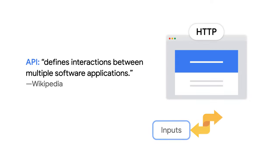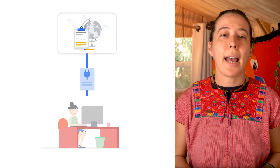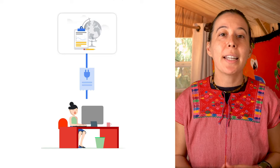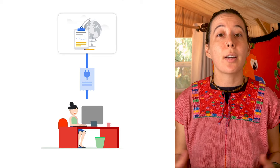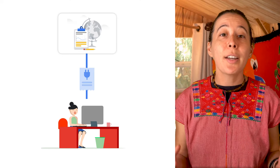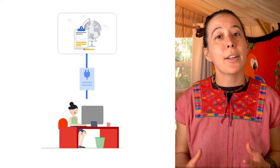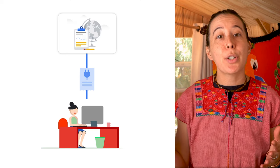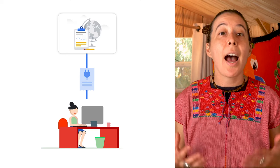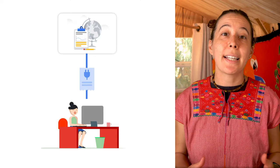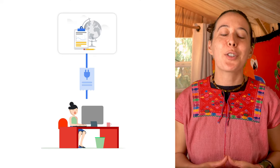API stands for Application Programming Interface and it's like a library of functions that passes information over the web. It defines the inputs and outputs available over HTTP. For example, let's say you are a logistics company and you would like to enable your partners to integrate your package tracking service into their e-commerce website. You then create an API that takes shipment details as inputs and returns a tracking ID in the response. Another API uses the tracking ID to check the status of the package. This now makes your service portable.